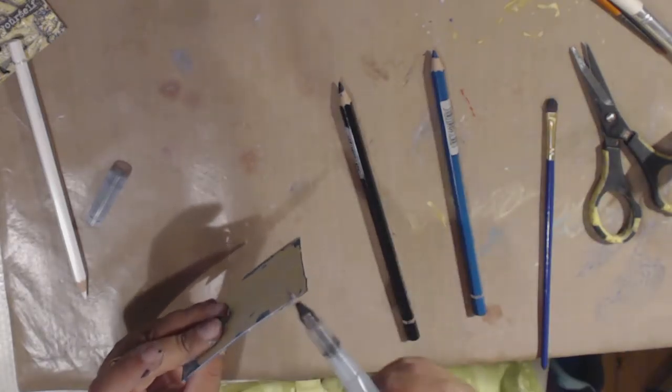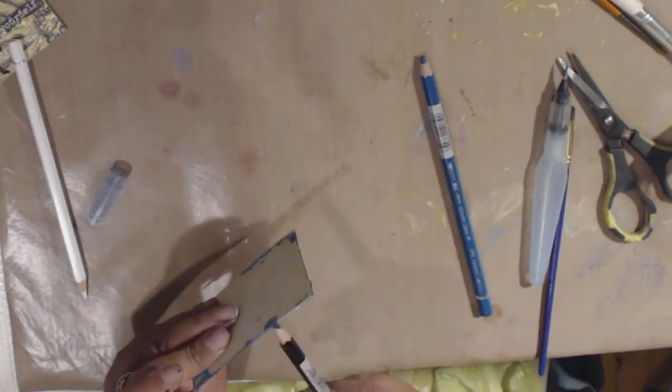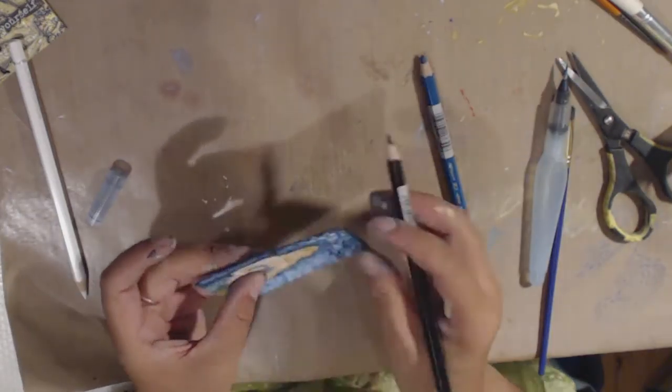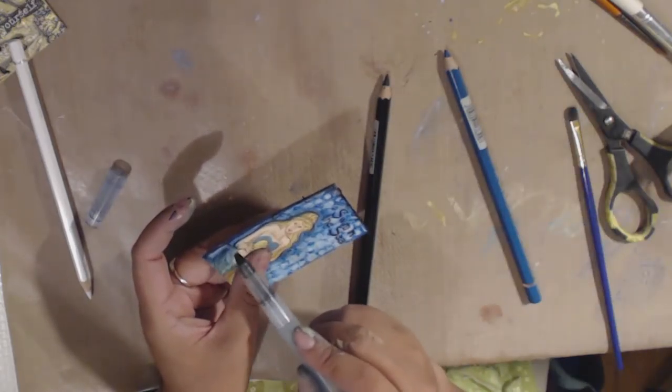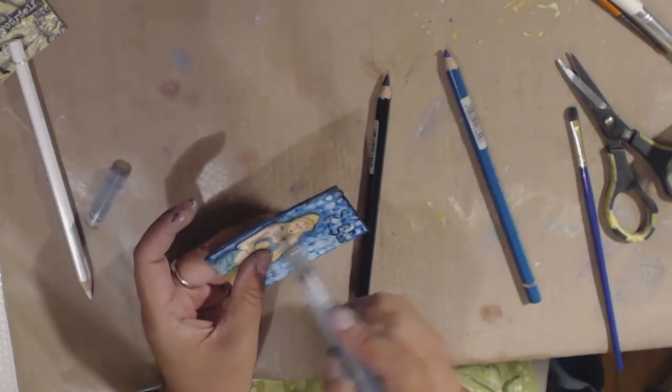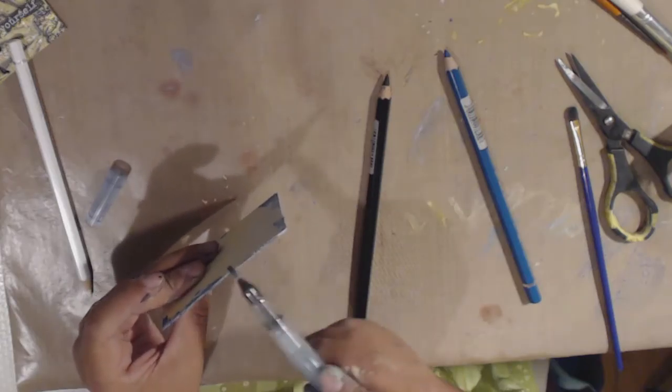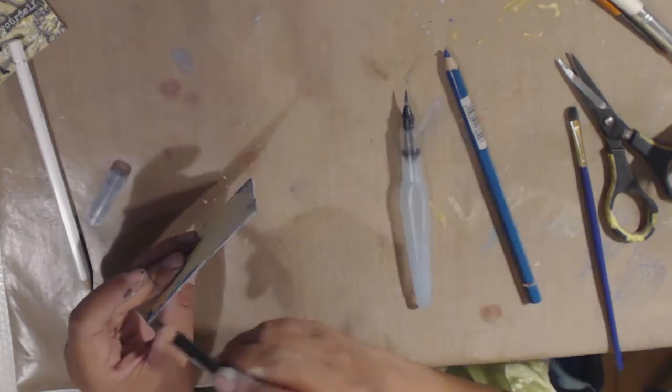Now using my black watercolor pencil, I start just shading in around the edges and trying to unify everything and blend everything together. This is not a necessary step - it's just something that I like to do. I like to create a bit of a border.